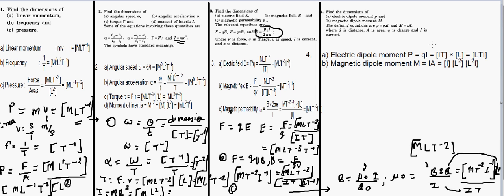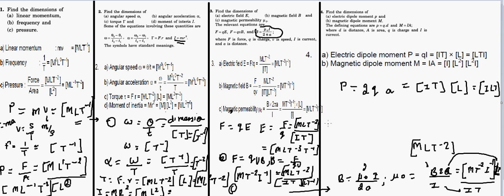For electric dipole moment, the formula is p = qL, where q is charge (IT) and L is distance. So the dimension is ITL. For magnetic moment, the formula is M = iA, where i is current (I) and A is area (L²). The dimension of magnetic moment is IL².